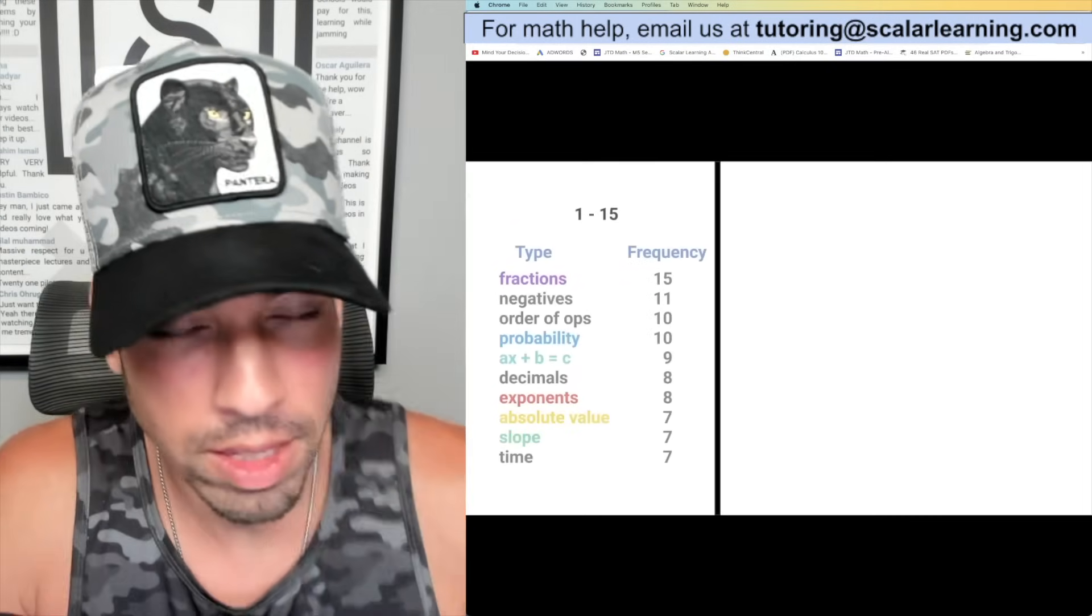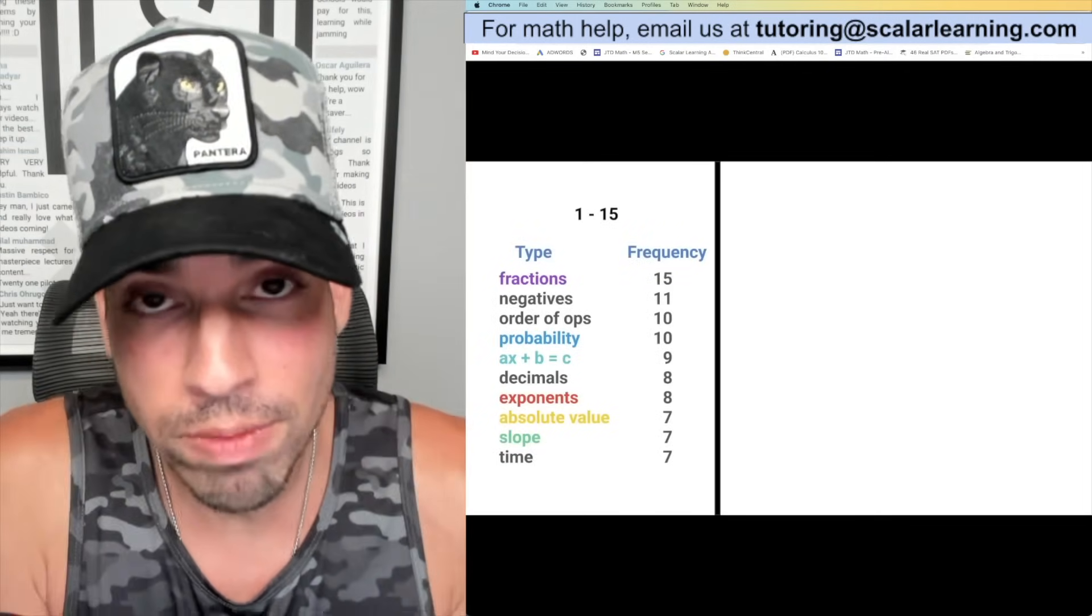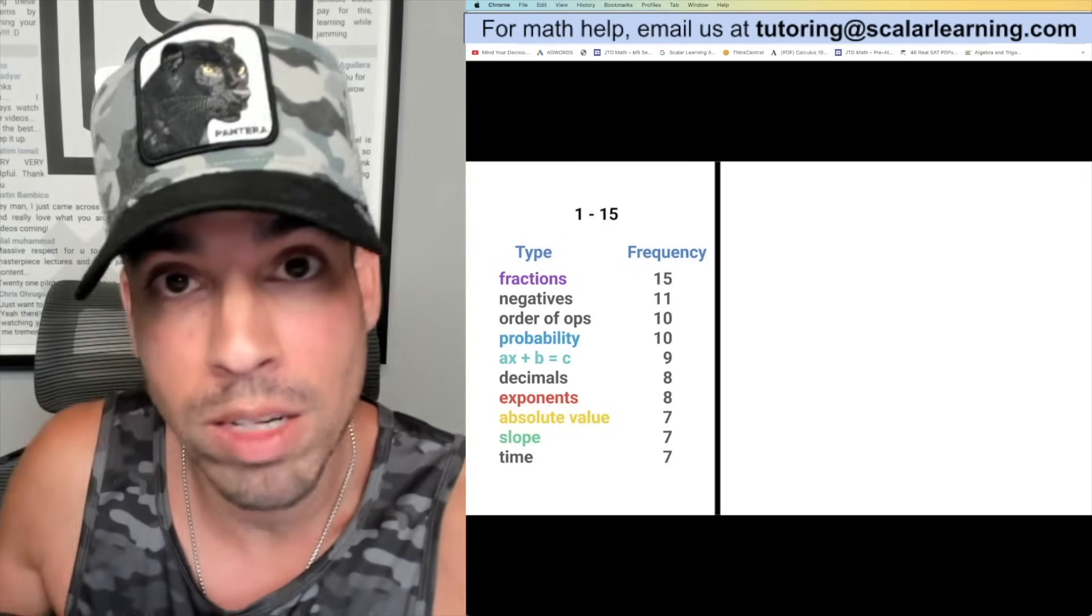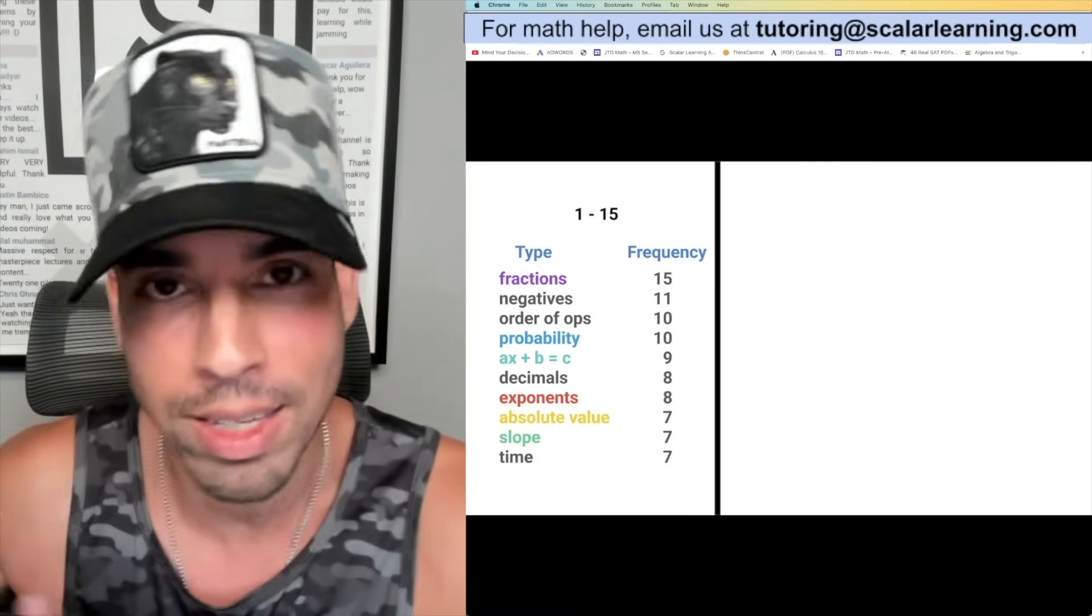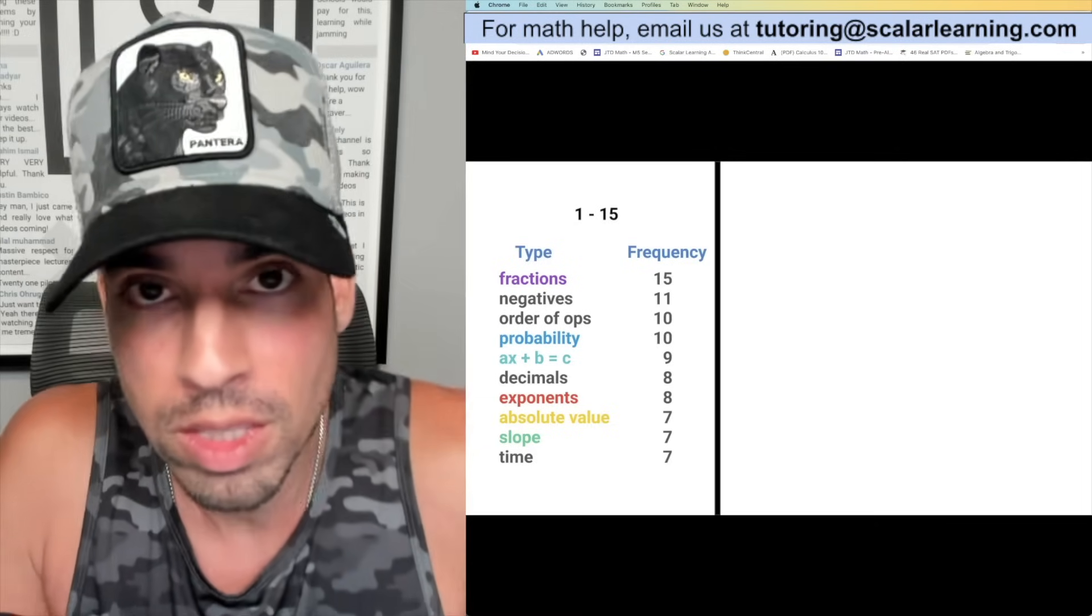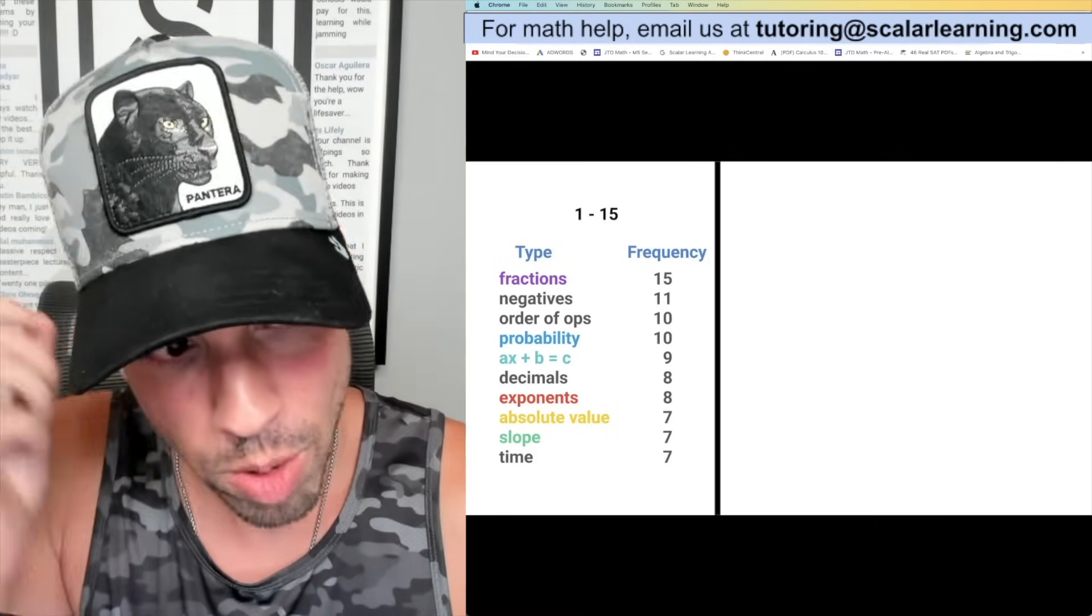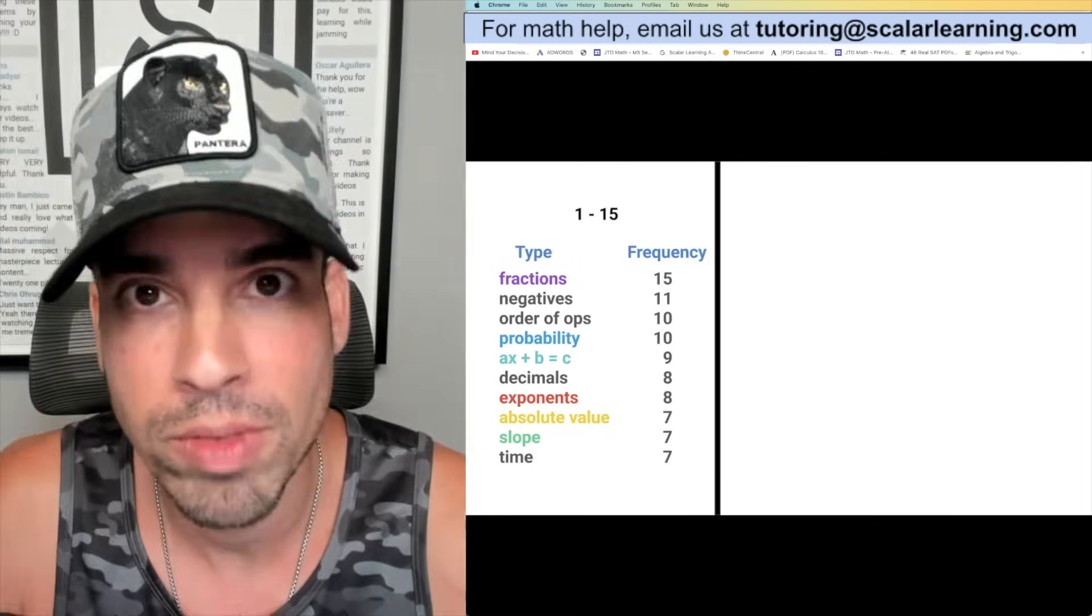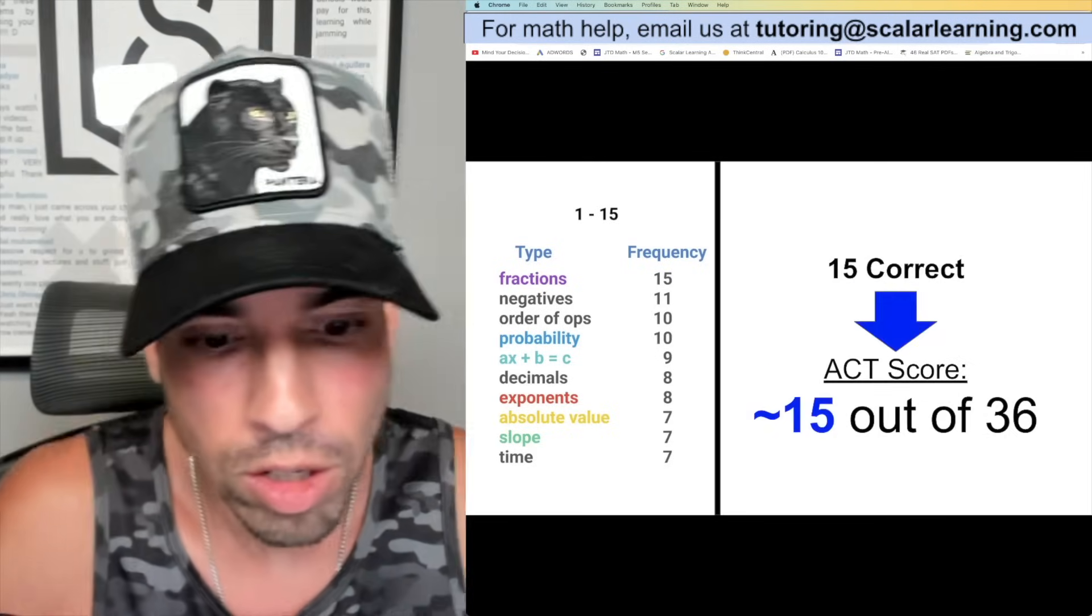Let's look at the first 15. The thing to remember about the ACT is that it gets progressively more difficult. Now, does that mean that a random question 38 might be easier than a random 22? Yeah, it can happen. But in general, the deeper you get into the test, the more difficult each problem type becomes.